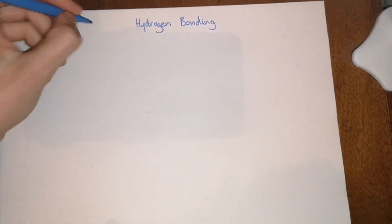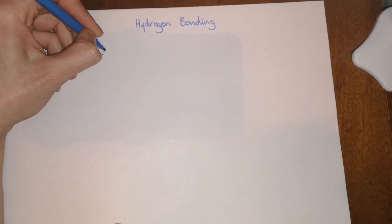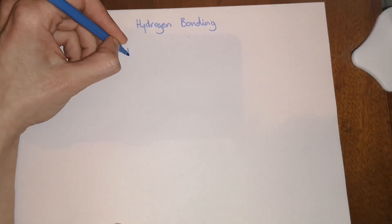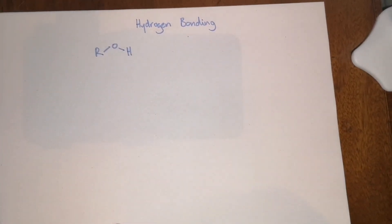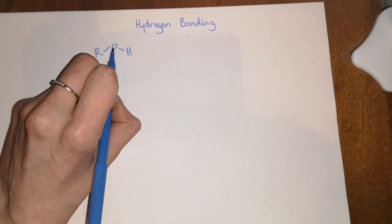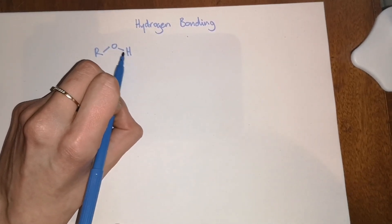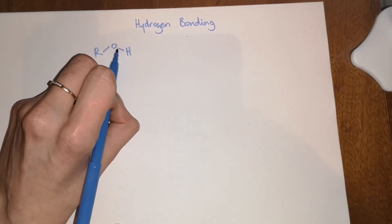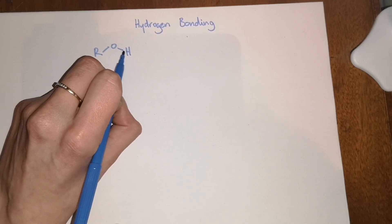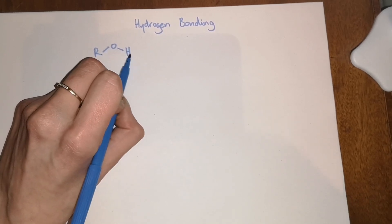So in the video about electronegativity we talked about the fact that in an alcohol molecule or an alcohol containing molecule, the oxygen is much more electronegative than the hydrogen atom. That means that the electrons in the covalent bond are constantly being pulled closer towards the oxygen than the hydrogen.